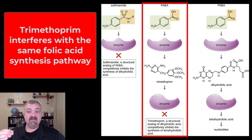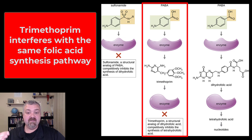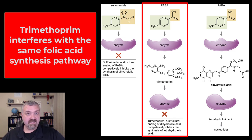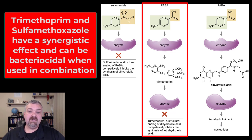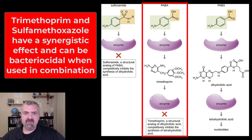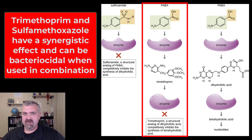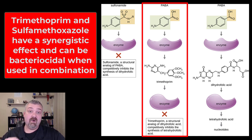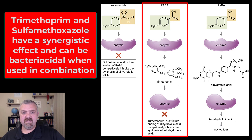Trimethoprim is going to block the same pathway just later on down the line, and that's why you often see them used together. As you can see here in the middle, trimethoprim acts a little bit later in the process. The sulfa drugs block the production of dihydrofolic acid, and then trimethoprim blocks the actual production of folic acid. They are bacteriostatic individually, but if you use both together you can block folic acid production enough that they can actually become bactericidal. That's why the primary antibiotic I talk about in class is the combination — trimethoprim-sulfamethoxazole — which is a good example of drug synergy.